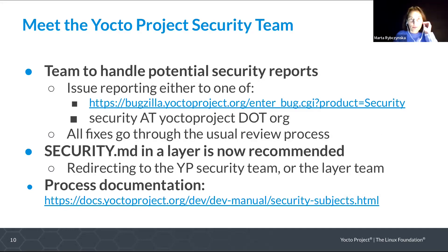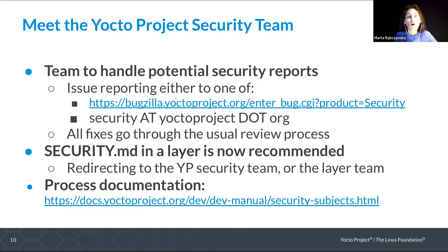Now let's meet the Yocto project security team. This is a team handling potential security reports to the Yocto project. People can report either to Bugzilla or to the main security at yoctoproject.org. All the fixes being submitted by the Yocto security team go through the usual review process — they are not bypassed. We are also now recommending every layer to have a security 'security.md' file that gives information for security researchers on how to contact that particular layer for a possible security issue.